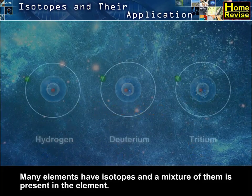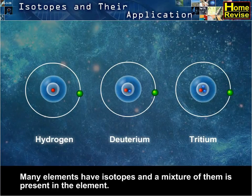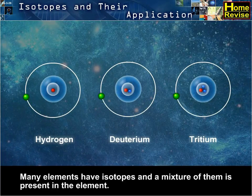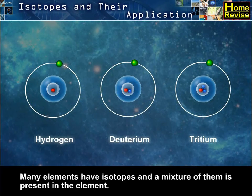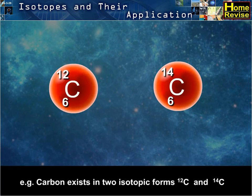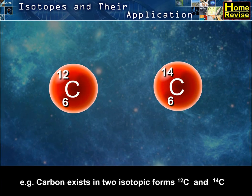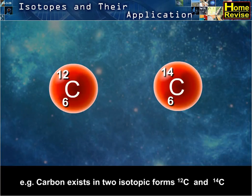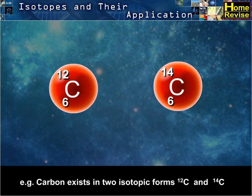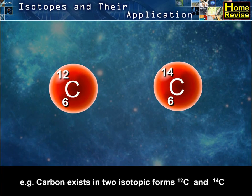Many elements have isotopes and a mixture of them is present in the element. For example, carbon exists in two isotopic forms: 12C and 14C.